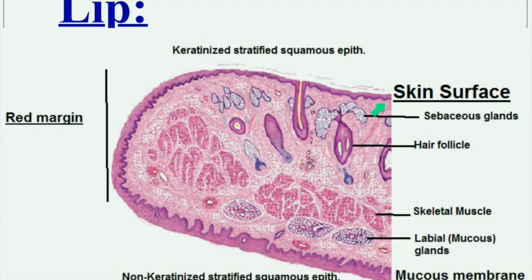This is a diagram for the lip. The outer surface is formed of skin, which is keratinized stratified squamous epithelium, characterized by the presence of hair follicles with associated sebaceous glands. On the inner side, we have a typical oral mucosa formed of non-keratinized stratified squamous epithelium, and in the lamina propria you can see the labial glands, which are mainly mucous glands with occasional serous acini.